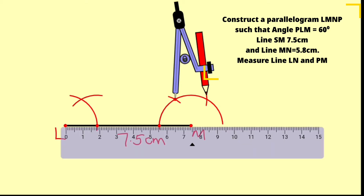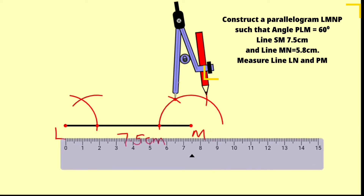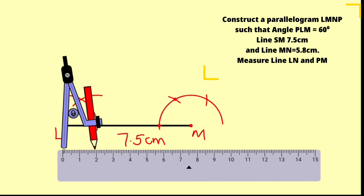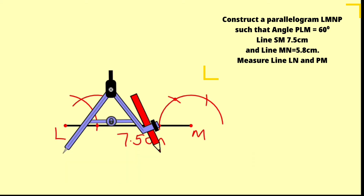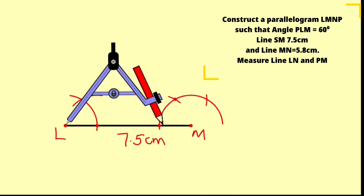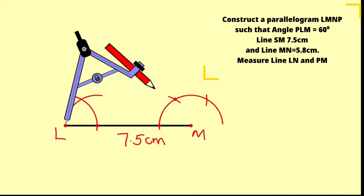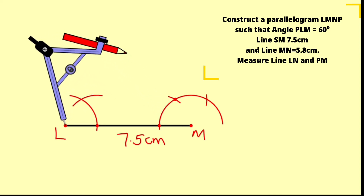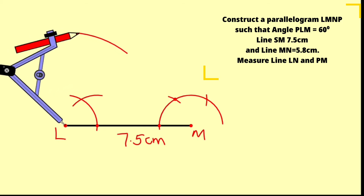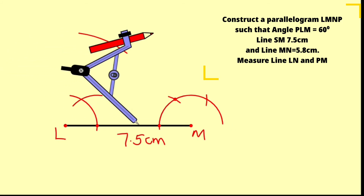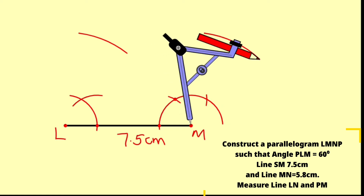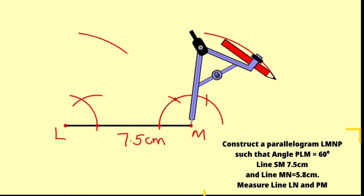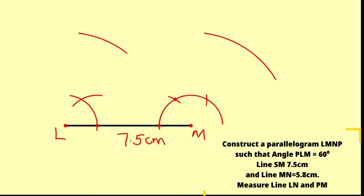Let me bring my ruler and measure 5.8 centimeters on the compass. Now, take the pointer to point L and construct an arc upward to indicate the distance LP of 5.8 centimeters. Take the pointer to point M again — since we have equal opposite sides — and construct another arc upward. Now take away the compass so we can extend the lines LP and MN using a ruler.